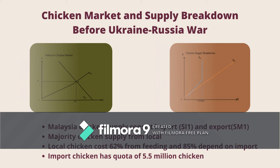In Malaysia, chicken supply comes mostly from local producers and a minority from imports, illustrated by local supply curve SL1 and foreign supply curve SL2. The import chicken is inelastic at 5.5 million because that is the import quota, so market supply is also more inelastic after reaching that point. For local suppliers, about 62% of chicken cost comes from feed, and feed is 85% dependent on imports.